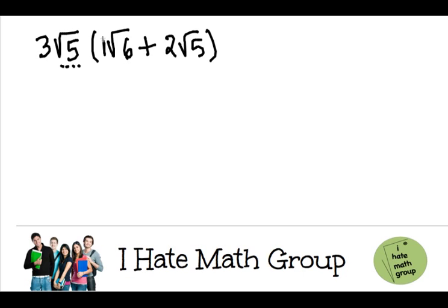Now, imagine there is an invisible one right here. So when you do this, 3 times the square root of 5 times 1 times the square root of 6, you're going to do 3 times 1, which is 3. The square root of 5 times the square root of 6 is just the square root of 30.